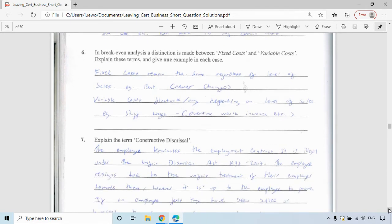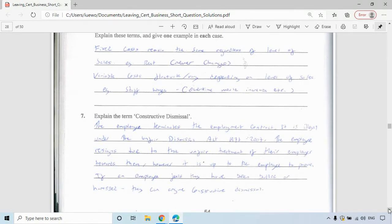Question seven, explain the term constructive dismissal. The employee terminates the employment contract. This is illegal under the Unfair Dismissals Act 1977-2007 because the employee feels that they're resigning due to unfair treatment of their employer towards them. But the employee has to prove it. If they feel they've been bullied or harassed, for example, they can then argue constructive dismissal. This is part of unit one, industrial relations.